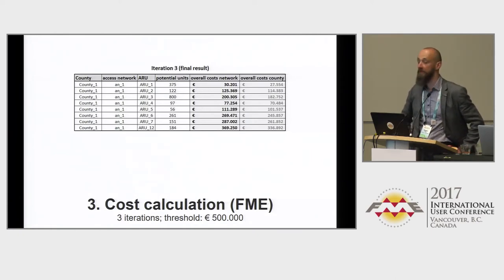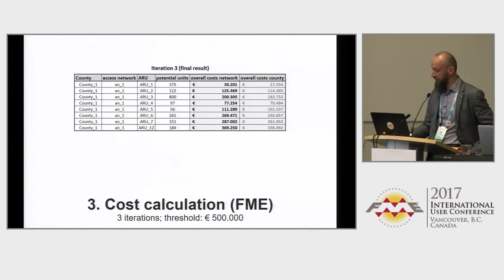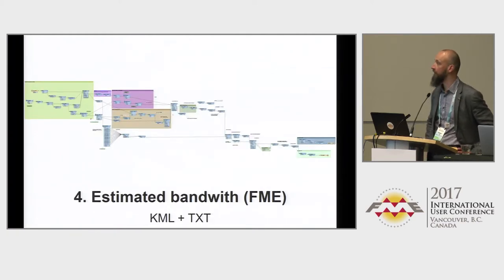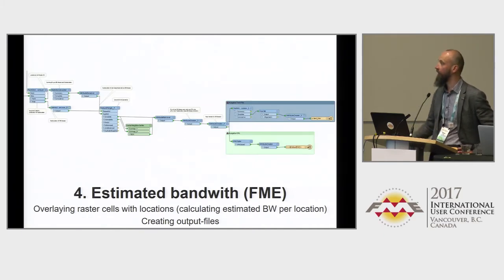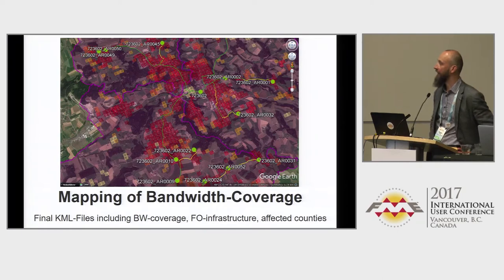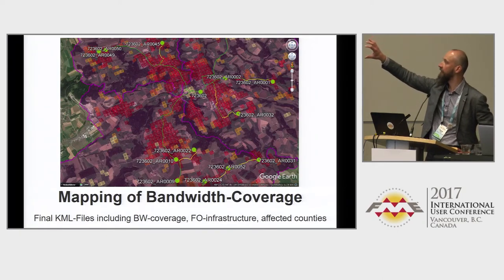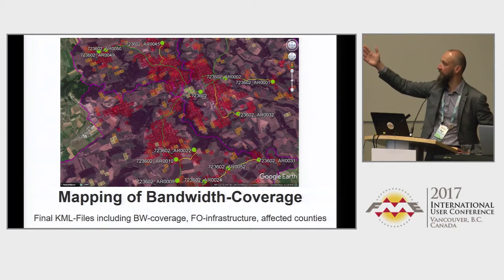With the final calculations done, our customer could apply for the projects at the governmental organization responsible for the funds. We had to provide cost calculations county-wise, since counties themselves are also charged for network improvements, using merges, overlays, and group-bys. We also created KML files to show the estimated bandwidth coverage, overlaying the 100x100 meter raster with IRUs and making calculations. The final output was colored KML files showing the seven bandwidth classes — red meaning high-speed internet and white meaning slower connectivity in those regions.